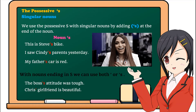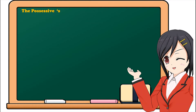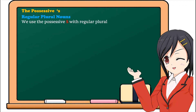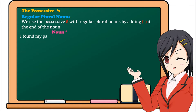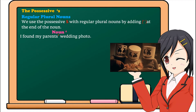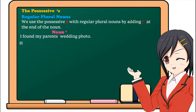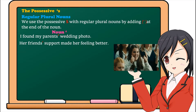Now let's see with regular plural nouns. With regular plural nouns, we use the possessive S by adding just the apostrophe at the end of the noun. For example, I found my parents' wedding photo. Or her friends' support made her feel better.